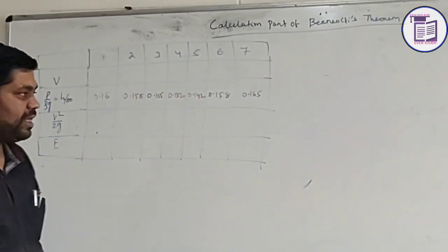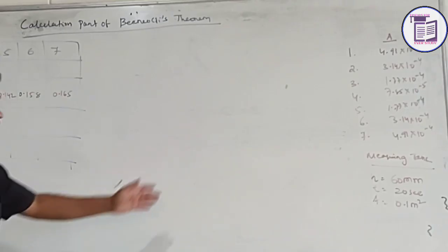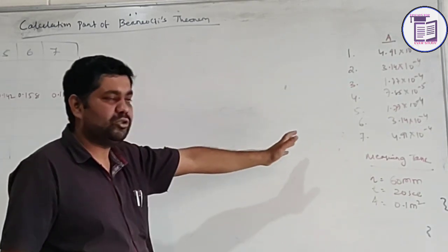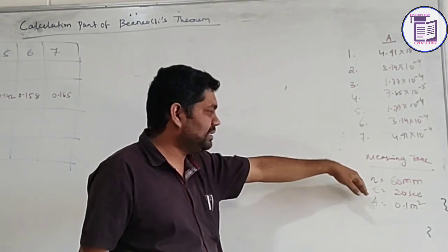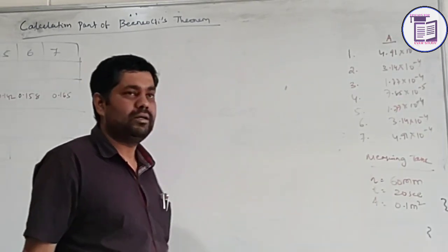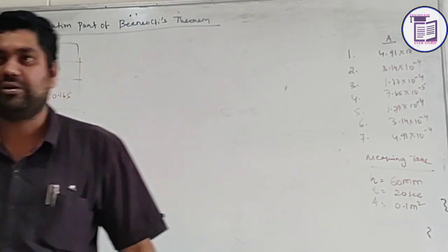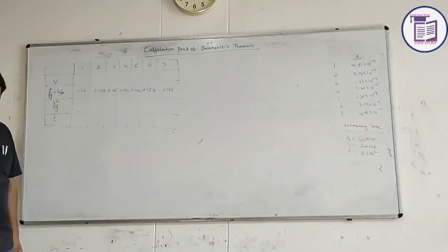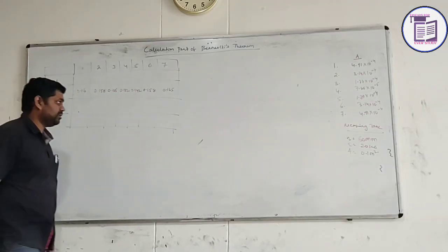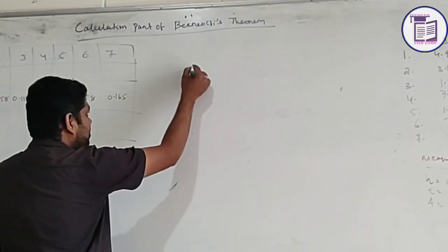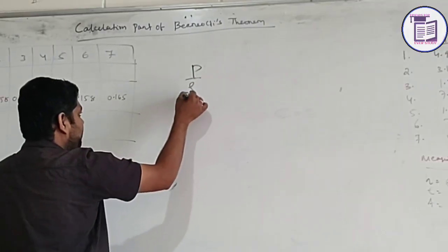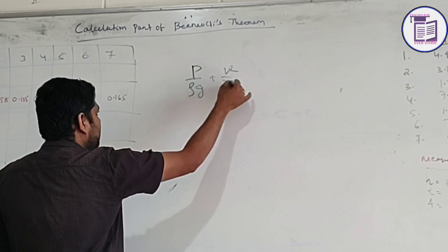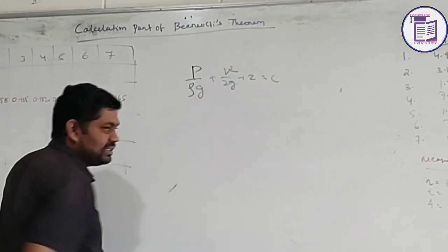Readings are taken here, and this is the data. This is the measurement of two areas, and this is the measuring time data. These are the data where, using this data, we can define the results. Going through this, first of all we can look at Bernoulli's theorem, which is: P by rho g plus V squared by 2g plus Z is equal to constant.